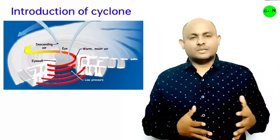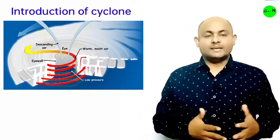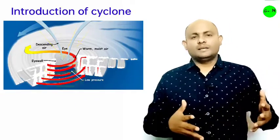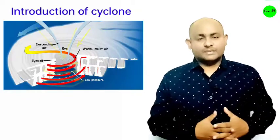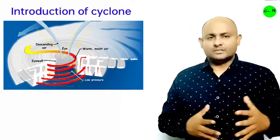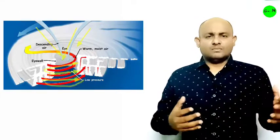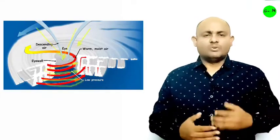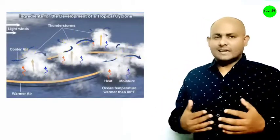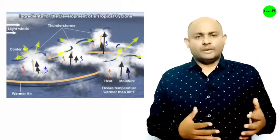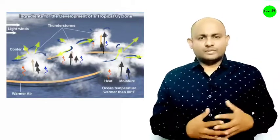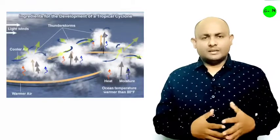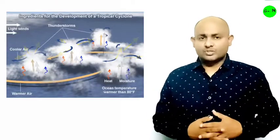Cyclones are basically rapid inward air circulation around a low pressure area. The air circulates in the anti-clockwise direction in the northern hemisphere and clockwise in the southern hemisphere. Cyclones are usually accompanied by violent storms and bad weather. The word cyclone is derived from the Greek word meaning the coils of a snake. It was coined by Henry Piddington.